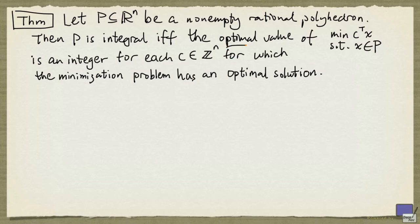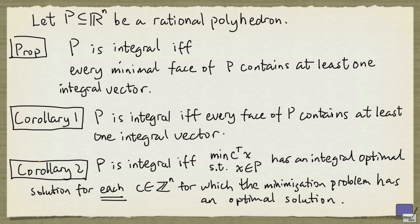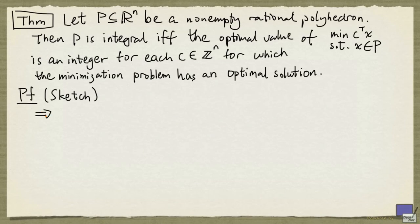Notice that we are now looking at just the optimal value. So this is indeed stronger than the second corollary here.